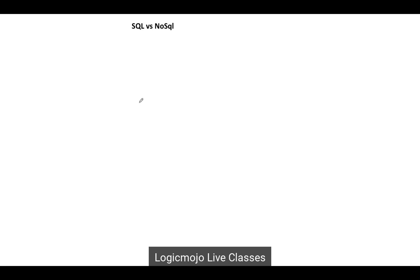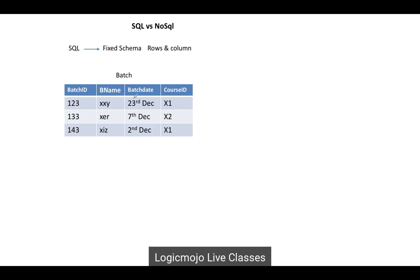Let's see the SQL and NoSQL details and which one to use for designing a system. In case of SQL, we already know that it has the fixed schema with rows and columns. Consider this example — this is one table, or you can say a relational database, where we have the table 'batch' with different columns: batch ID, batch name, batch date, and course ID. These are the different attributes and rows where we store values.